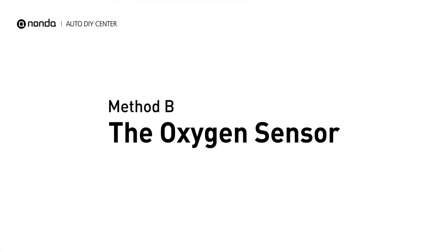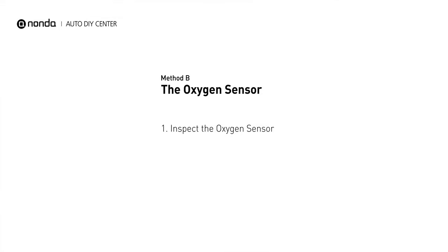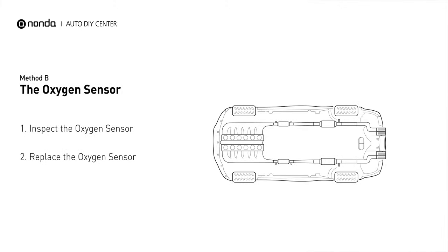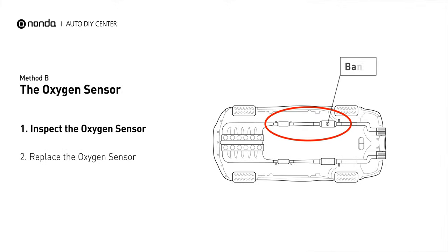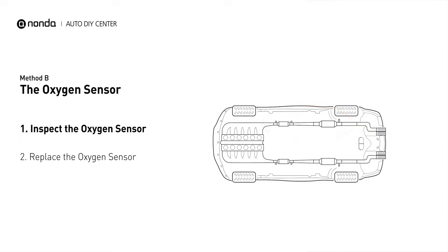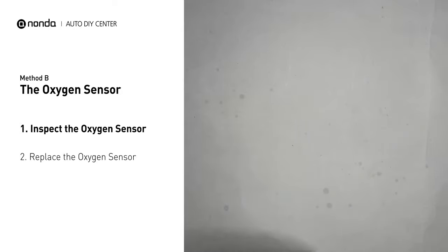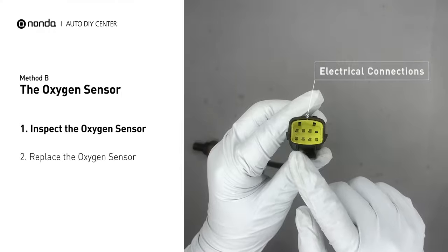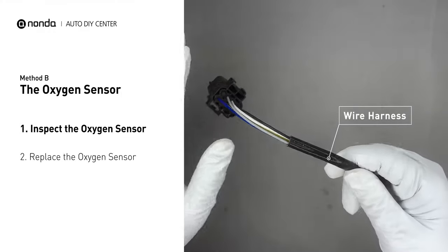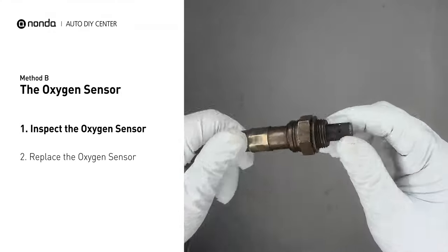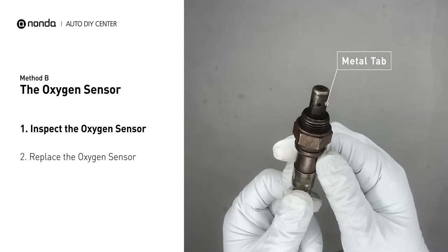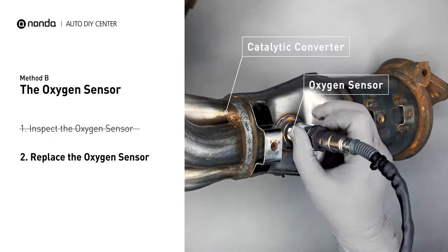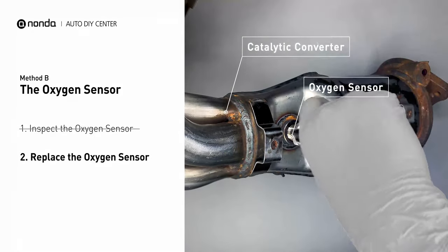Method B: Oxygen Sensors. The oxygen sensors are located before and after the catalytic converter. Bank 1 is on the side with cylinder number 1. Visually check the oxygen sensor's electrical connections, wire harness, and metal tabs for any damage. If damage is found, replace the oxygen sensors.